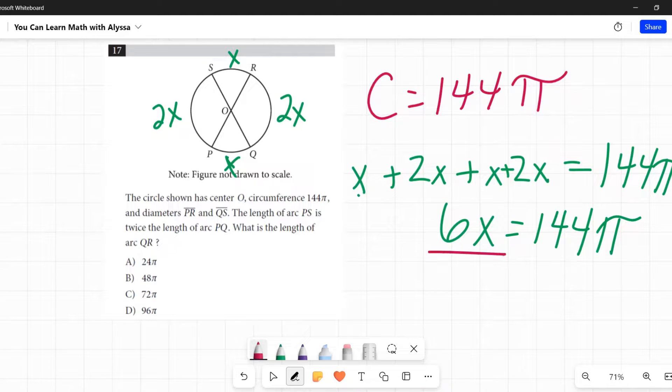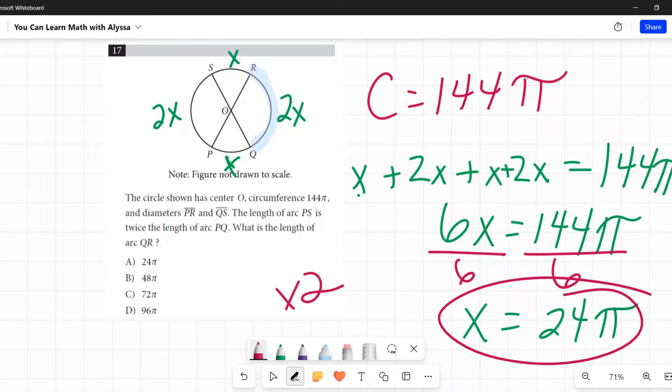To solve for X, I need to undo that multiplying by 6 by dividing by 6. I'm going to divide both sides by 6, and I get X equals 24π. Now they want to know what is the length of arc QR, and I've said QR is 2 times X. So I'm going to take that X and multiply it by 2. 24π times 2 is 48π. B is my answer.